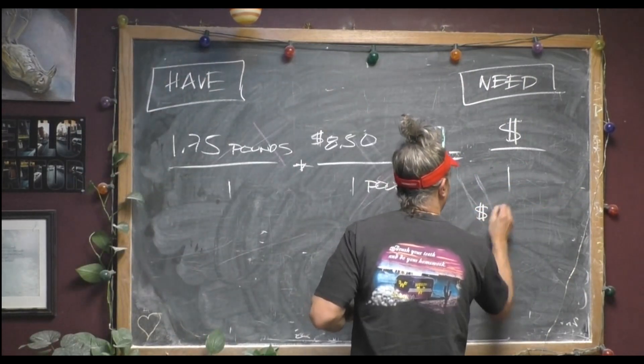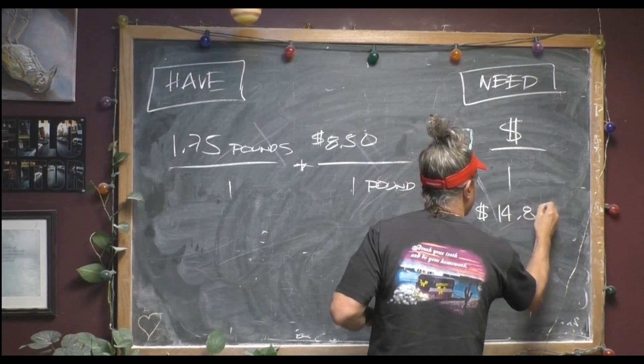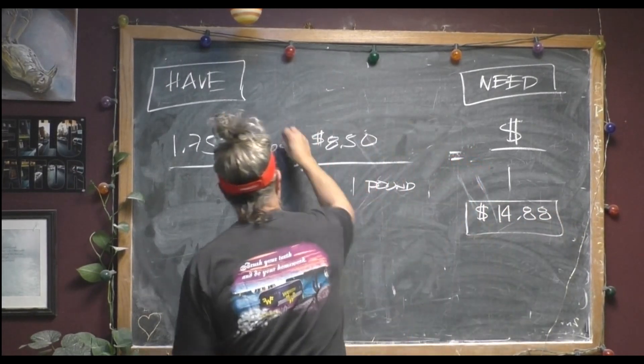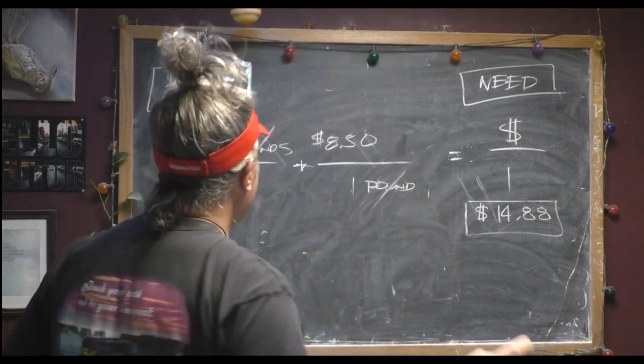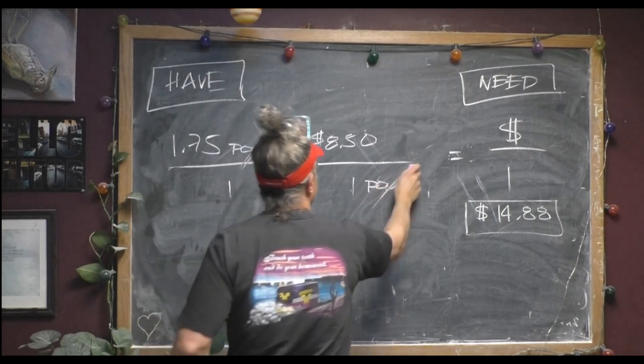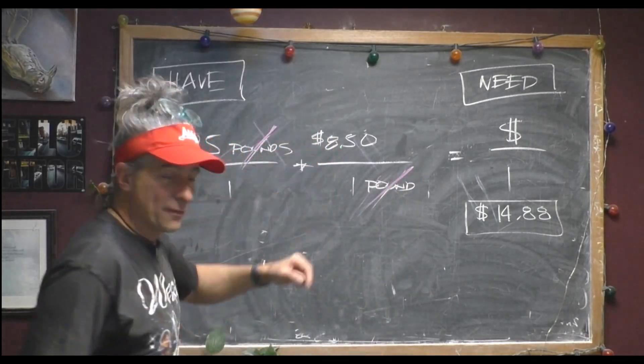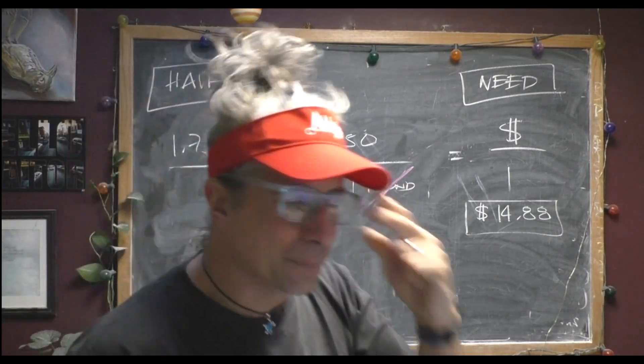So that's going to be $14.88 for that package. Because the pounds divide. Pounds are going to divide off. And then it's just 1.75 times 8.5. Very good. Next question up.